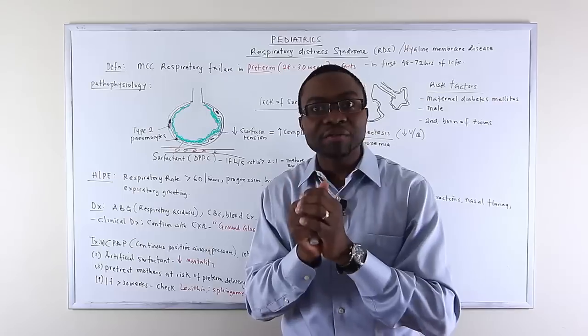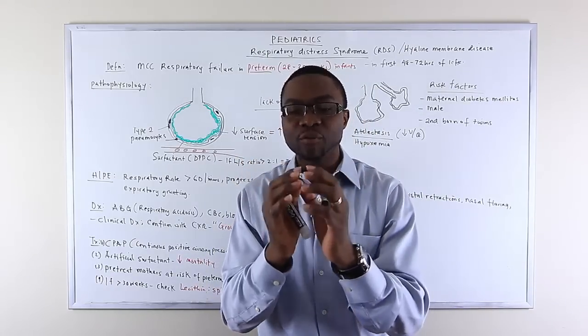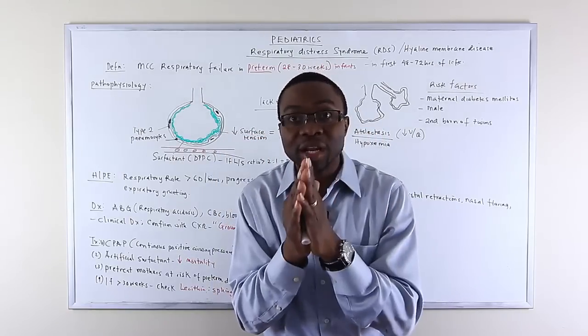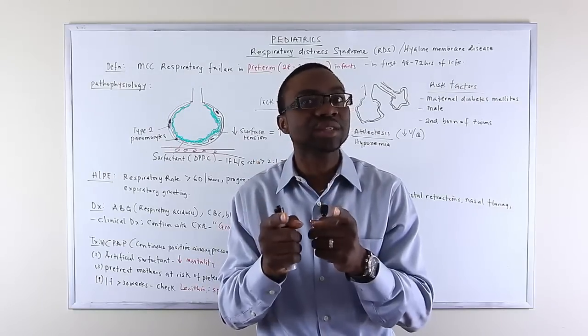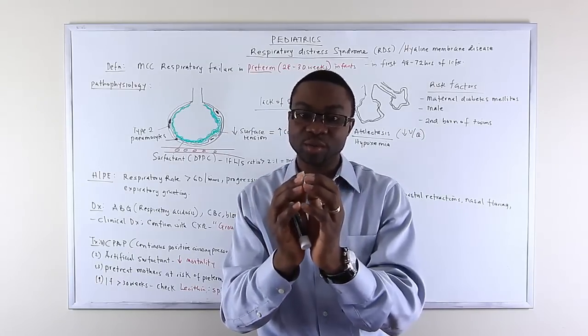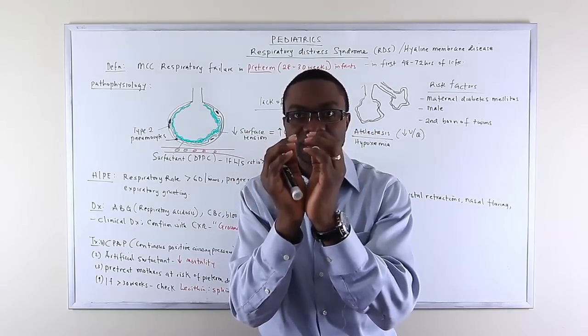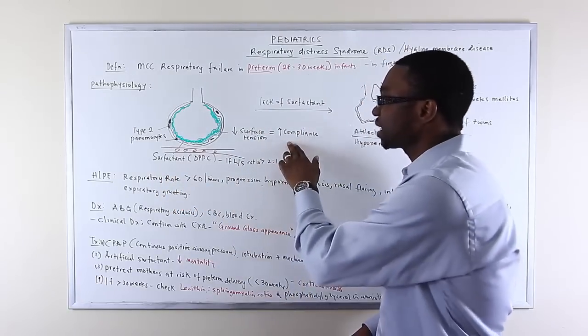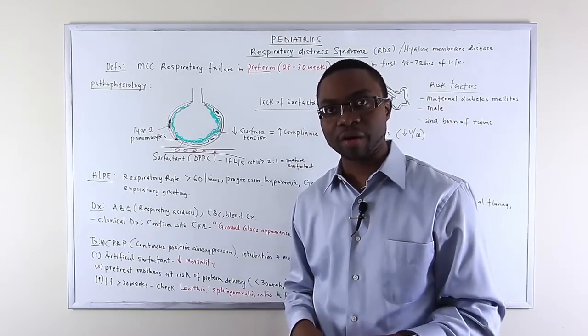Think about how much work it's going to take if every time the baby takes a breath the alveoli collapse completely. It's going to take a lot of work to pop it open and then it's going to collapse again. So you want residual volume, that little bit of residual volume left inside the alveoli. Surfactant decreases surface tension, thus increases the compliance of the lungs and prevents collapse of the alveoli.